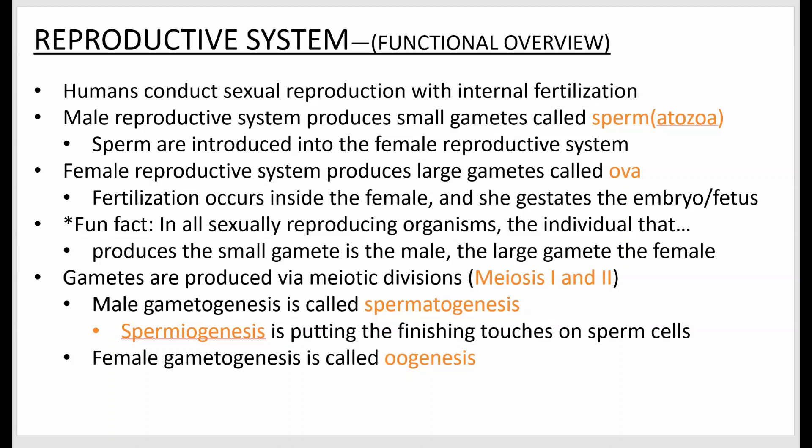Hello and welcome to the 2402 lab PowerPoint screencast for the reproductive system. We are sexually reproducing organisms, so this is just kind of an overview. We conduct internal fertilization — we introduce sperm cells into the female reproductive system where fertilization occurs, and then they develop as an embryo and then a fetus, which we'll discuss during the development section.